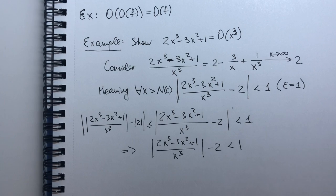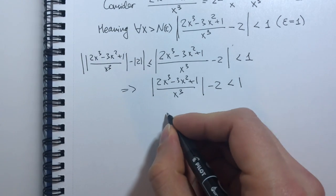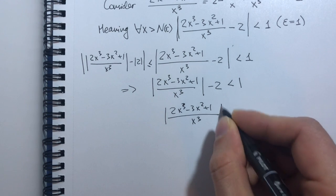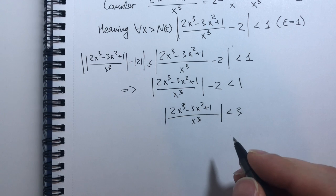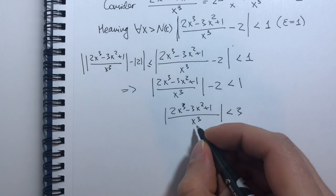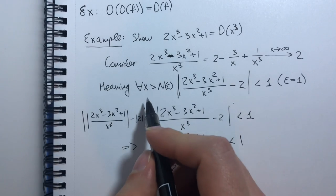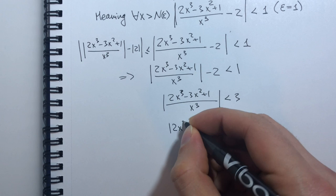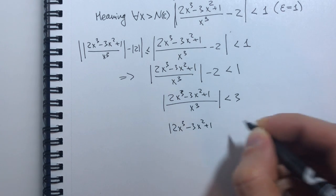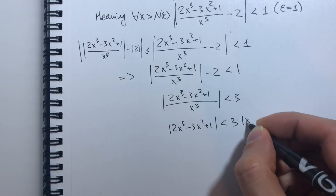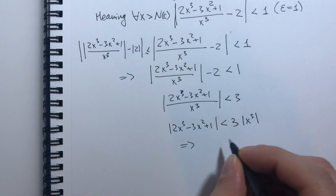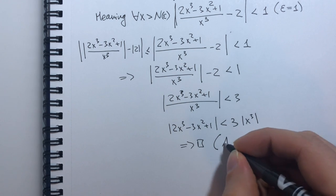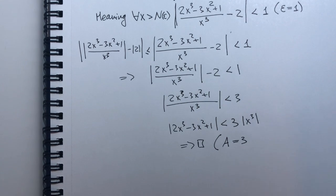So that means that if I have (2x³ - 3x² + 1)/x³ - 2, and it's bounded above by 1, if I bring my constants to the right hand side, I get it's bounded above by 3. And now to satisfy my big O definition I just multiply through by x cubed. Remember that x is bigger than a number that's certainly not zero. And I get 2x³ - 3x² + 1 is less than 3|x³|, which is exactly what we need. So if you remember in our definition for big O our constant was labeled A, so here we have A equal to 3.